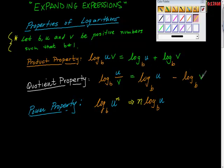The last one is the power property which suggests to us that log base b of u to the power of n is the same as n times log base b of u. What happened here is this just got rolled back to here.